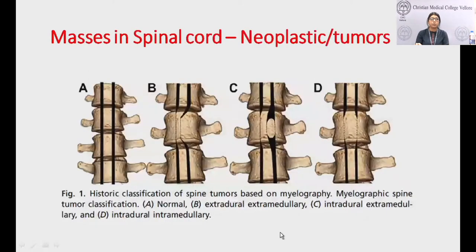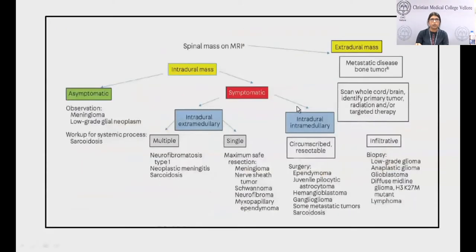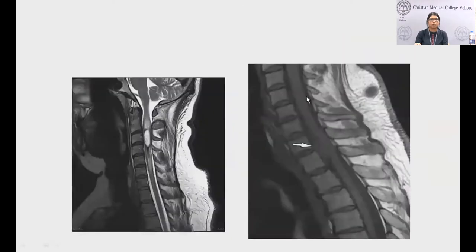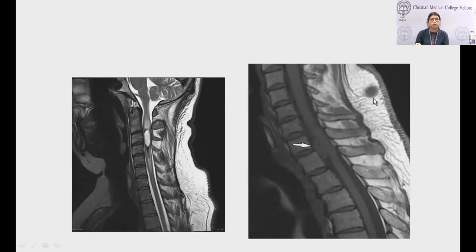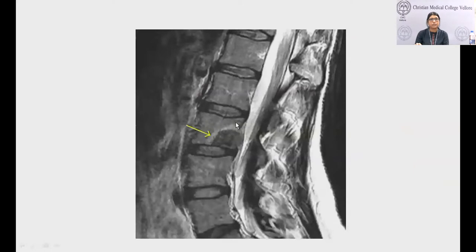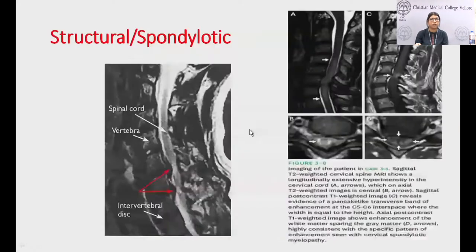Neoplastic tumors can be extradural extramedullary, intradural extramedullary, or intramedullary. This shows an intrinsic cord tumor of the cervical cord, and this is an intradural extramedullary lesion — a schwannoma. Vertebral metastases can cause compressive myelopathies.